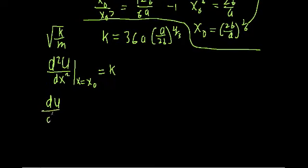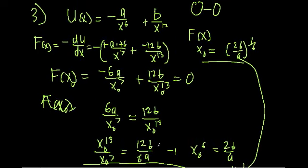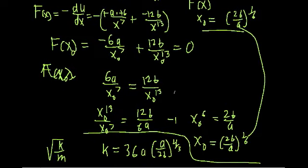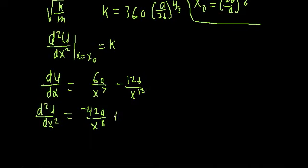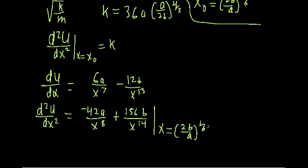Let me rewrite the first derivative of U with respect to x — without the additional minus sign — which is positive 6A over x^7 minus 12B over x^13. Now taking the second derivative with respect to x: 6A times negative 7 gives negative 42A over x^8, and negative 12B times negative 13 gives positive 156B over x^14. Now we need to plug in x = (2B/A)^(1/6).